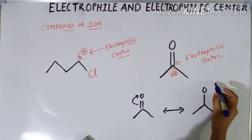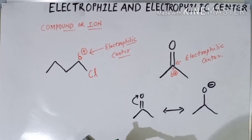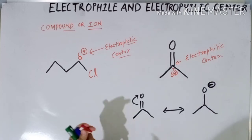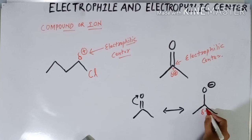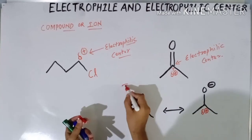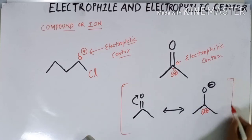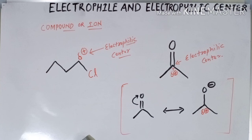Due to this electron shift toward oxygen, the oxygen becomes electron-rich and gains a negative charge, while this carbon loses its electrons and thus acquires a slightly positive charge. In this way, both the inductive effect and the resonance effect play a role in making this carbonyl carbon an electrophile or electrophilic center.